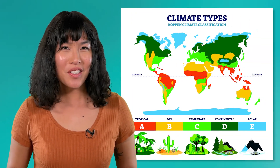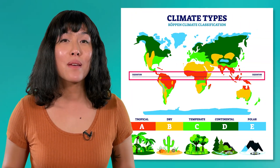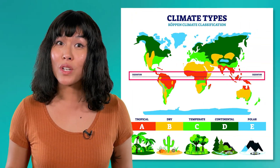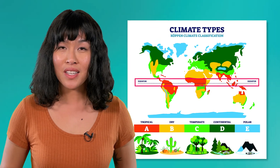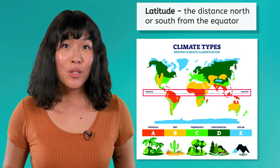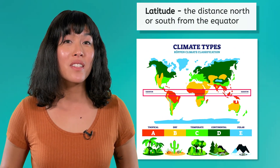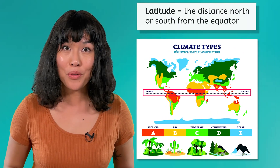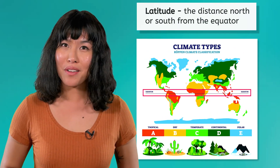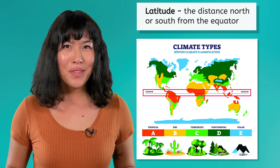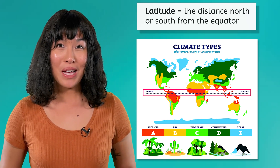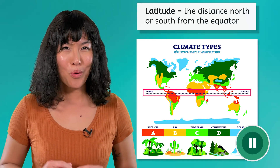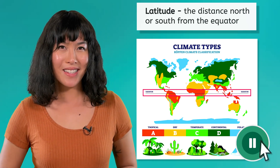Additionally, latitude determines the amount of direct sunlight a region receives. Latitude is a location's distance north or south from the equator. How do you think this impacts temperature? Pause the video here and record your prediction.